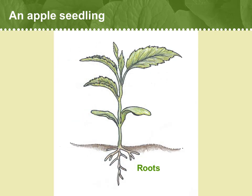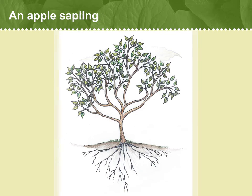Now the seedling is growing vigorously, putting out leaves and growing taller. It's also putting down roots into the soil, which gather up nutrients that will fuel its growth. After a few years, that seedling will become a sapling, strengthening its stem with wood and producing a lot of leaves. The apple is a woody plant, of course.